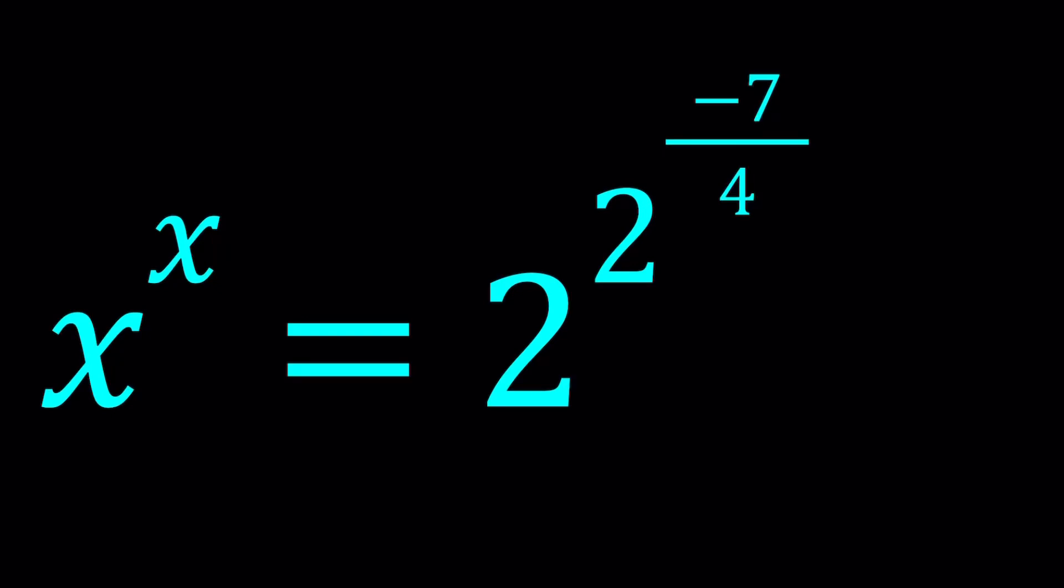Hello everyone, in this video we're going to be solving an exponential equation. We have x to the power x equals 2 to the power 2 to the power negative 7 over 4 and we're going to be solving for x values.